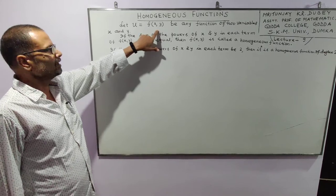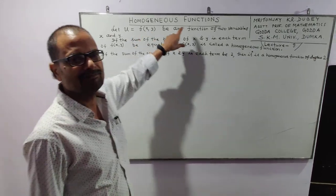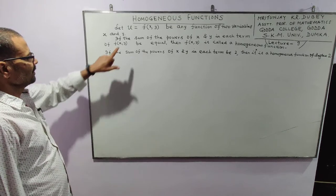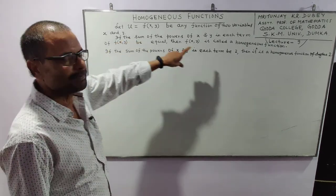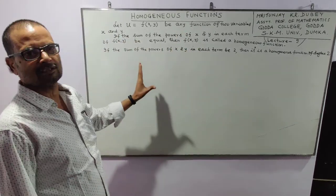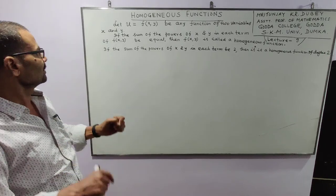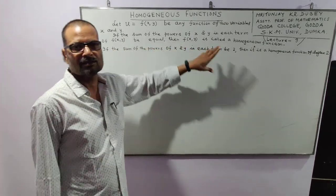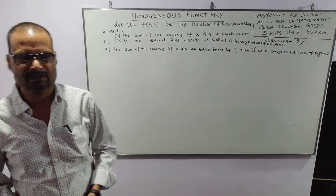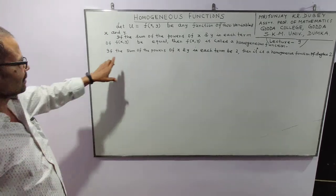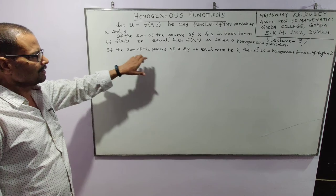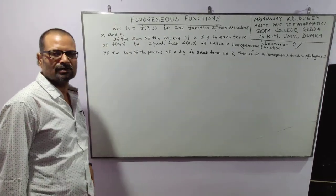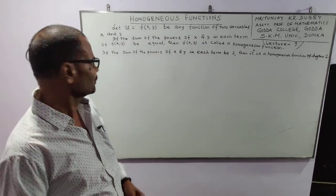Let u equal to f(x,y) be any function of two variables x and y. If the sum of the powers of x and y in each term of f(x,y) be equal, then f(x,y) is called a homogeneous function. If the sum of the powers of x and y in each term be 2, then it is said to be a homogeneous function of degree 2.